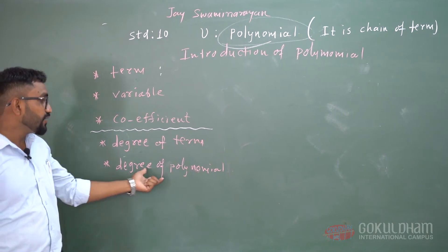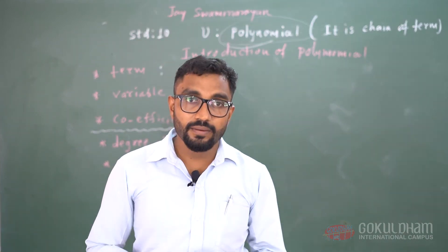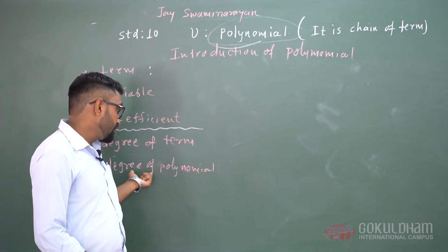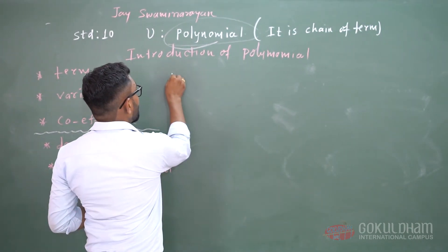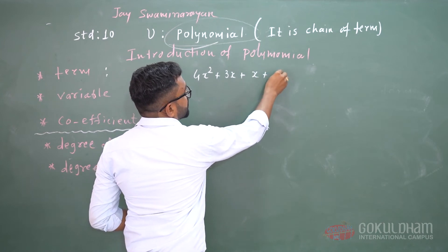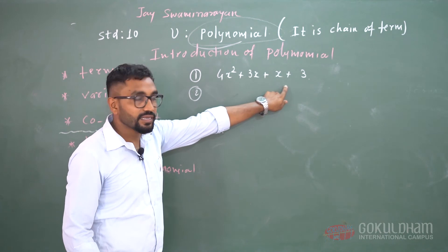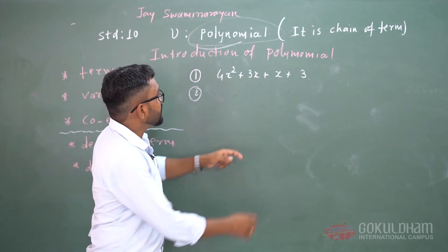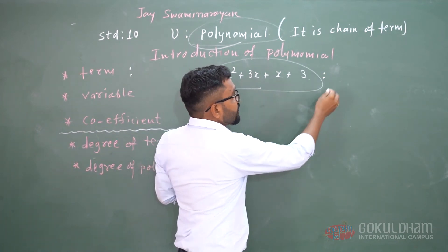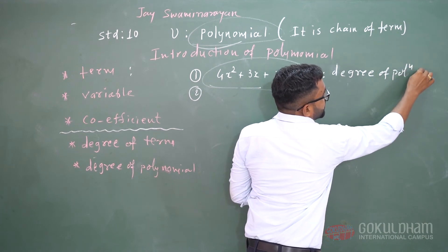Now our next topic is degree of polynomials. We have already learned about monomial, binomial, trinomial, and polynomials — polynomial means it is a chain of terms. Now we learn degree of polynomials. For example: 4x square plus 3x plus x plus 3. This is an example of polynomials. In a polynomial, the highest power of the degree is called the degree of the polynomial. So in this polynomial, the degree of polynomials is 2.